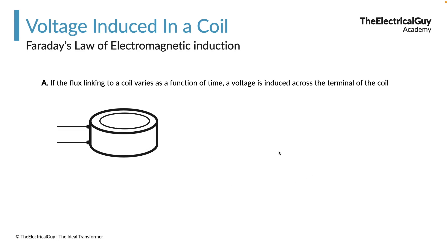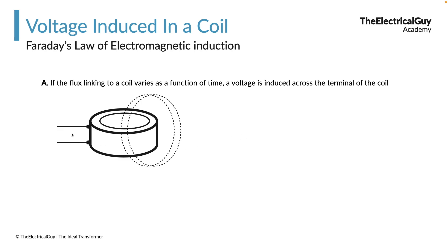For example, let's take this coil — it is subjected to magnetic flux, as you can see on your screen. Let's assume this flux is produced by a permanent magnet near the coil. If we vary this flux, a voltage will be induced across the terminals of the coil. There is no physical connection between the permanent magnet and the coil, but still a voltage is induced. That is the magic of electrical engineering — one of the most important discoveries Michael Faraday made.